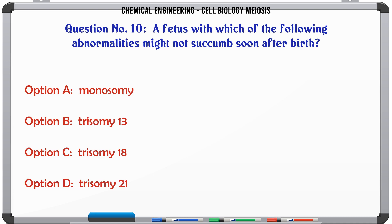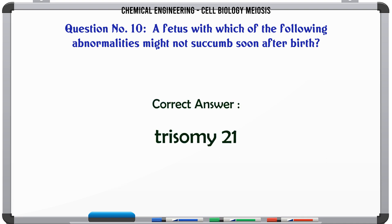A fetus with which of the following abnormalities might not succumb soon after birth? A. Monosomy. B. Trisomy 13. C. Trisomy 18. D. Trisomy 21. The correct answer is Trisomy 21.